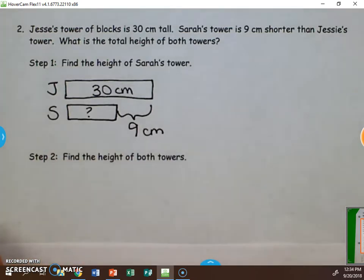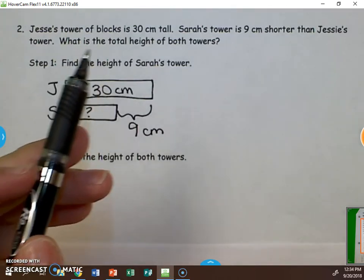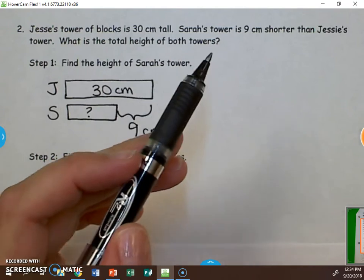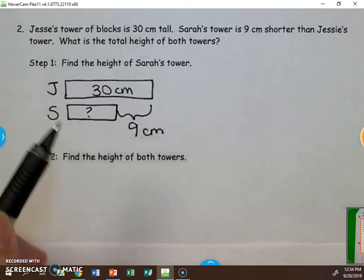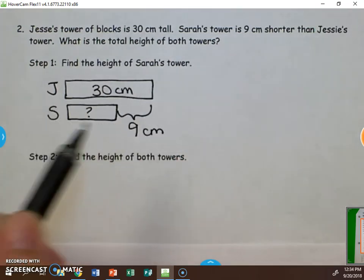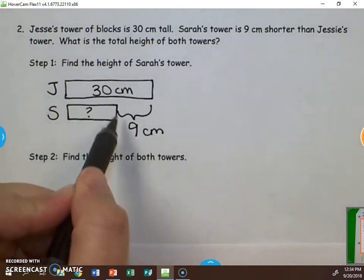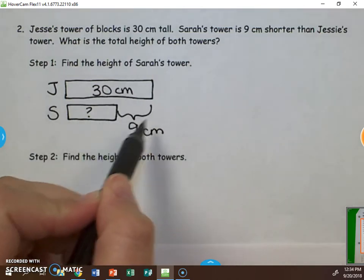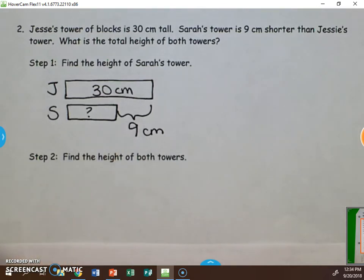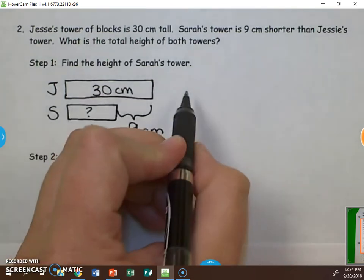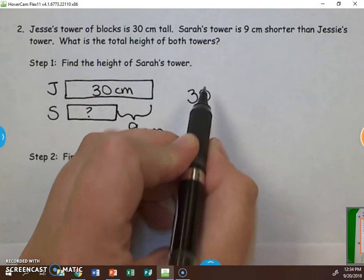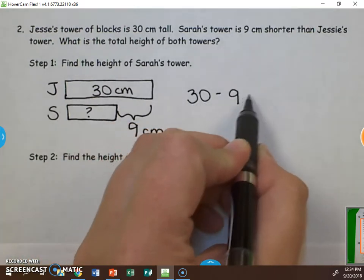Once we know this, we need to figure out a way to solve the problem because we need to find what is the total height of both towers. So what is Sarah's tower then? Well, we know there's a difference of 9 centimeters. And difference in math means subtraction. So we are going to take 30 and subtract 9.